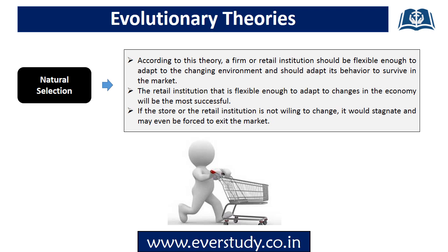The next theory is natural selection. According to this theory, a firm or retail institution must be flexible in order to adapt to the changing environment and survive in the market. The retail institution that is flexible and can easily adapt to changes will be the most successful in the economy. If an institution cannot change itself, it will not develop, it will not remain active, and it will have to exit the market. Essentially, for survival in the economy, retail stores must adapt to the changes in their micro environment.